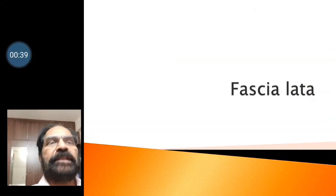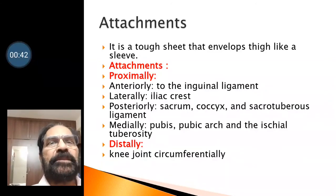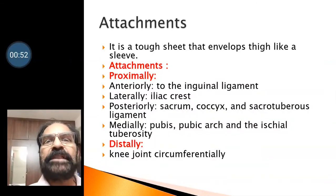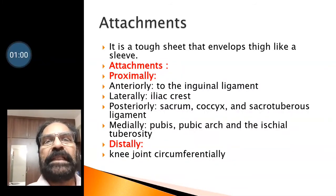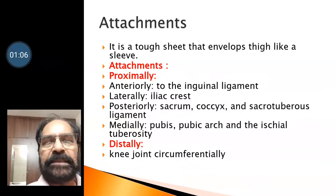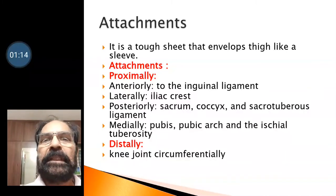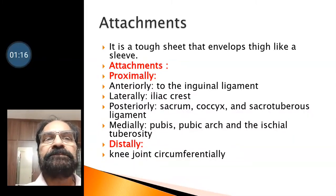First we will start with fascia lata. Coming to attachments, it is a tough sheet that envelops the thigh like a sleeve. Its attachments proximally are: to the inguinal ligament anteriorly, laterally to the iliac crest, posteriorly to the sacrum, coccyx and sacrotuberous ligament. And medially it is attached to the pubis, pubic arch, and ischial tuberosity.